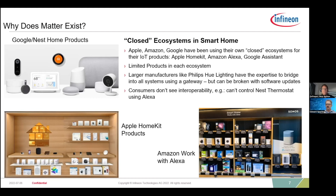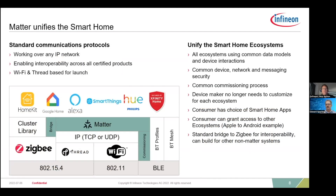Where does MATTER actually fit into the smart home? MATTER was really built to unify the smart home. It's a standard communication protocol built on IP. The initial launch is with Ethernet, Wi-Fi, and Thread, and it's really intended to unify devices across these different ecosystems. We're seeing a lot of devices starting to launch now. You've got common messaging, common commissioning, and common security. What that means for a device maker is you can build a device and it's going to work across these ecosystems — a real advantage instead of making all these different flavors. For consumers, this is a huge advantage.